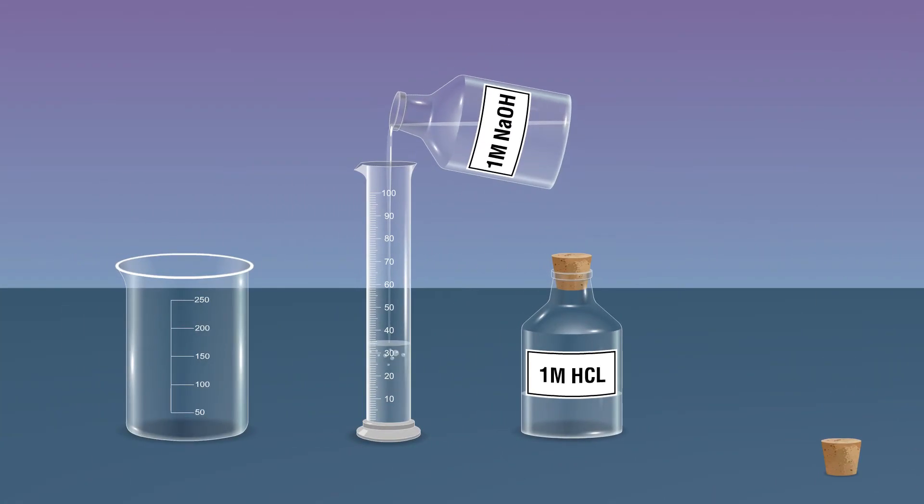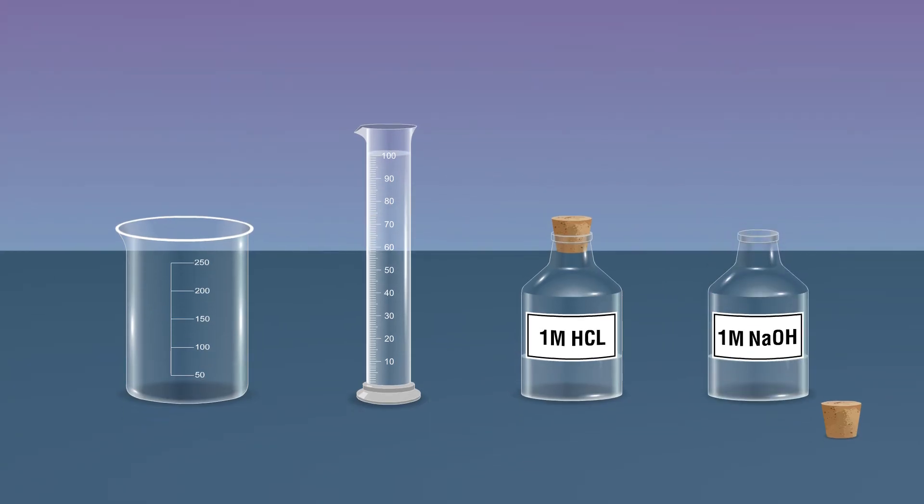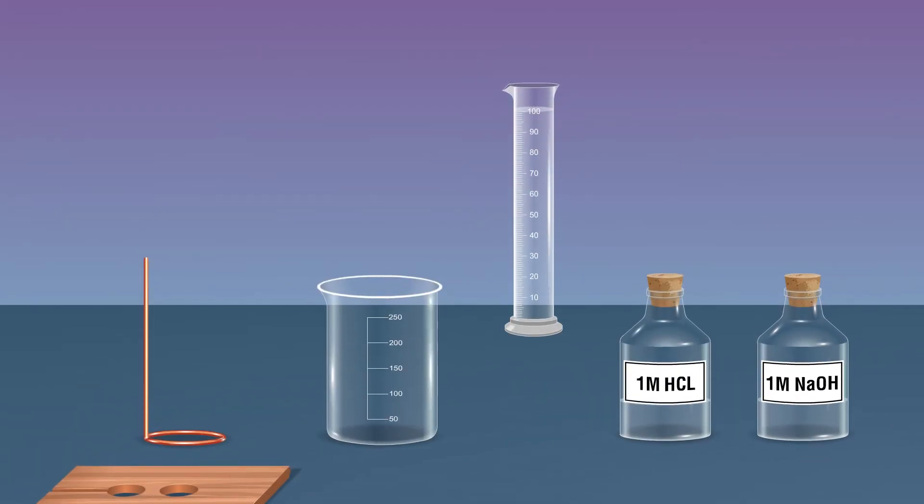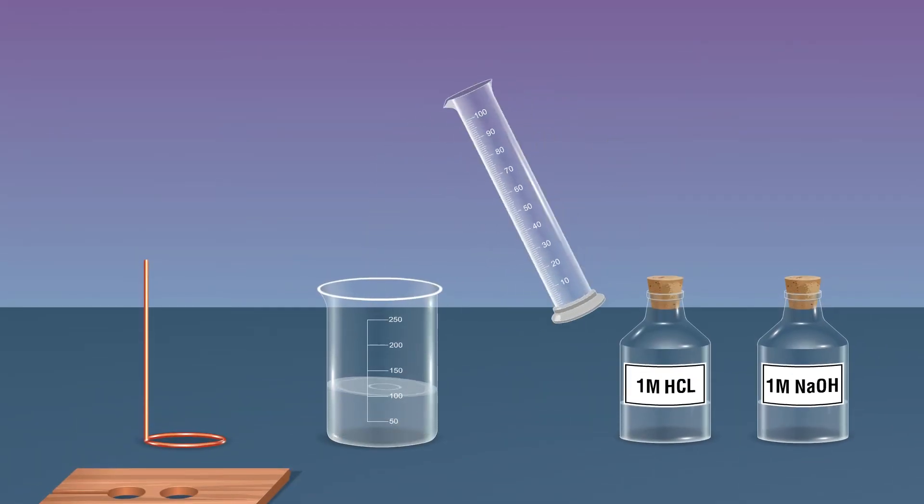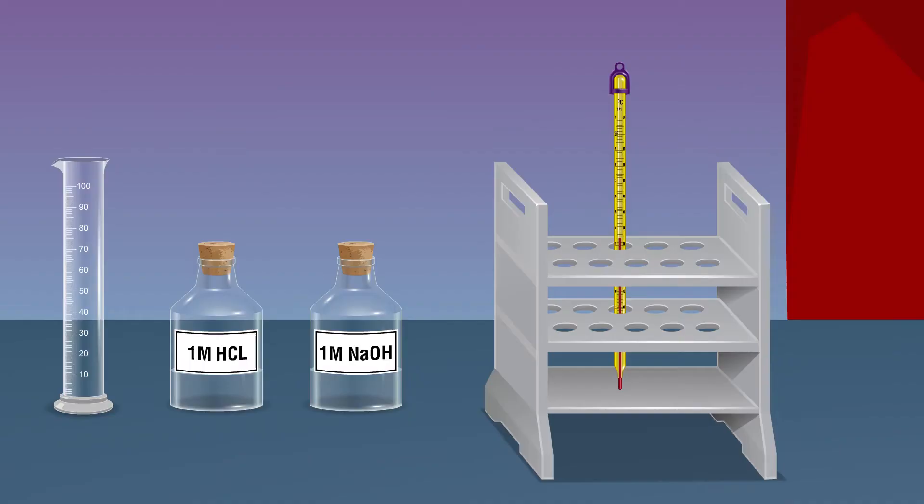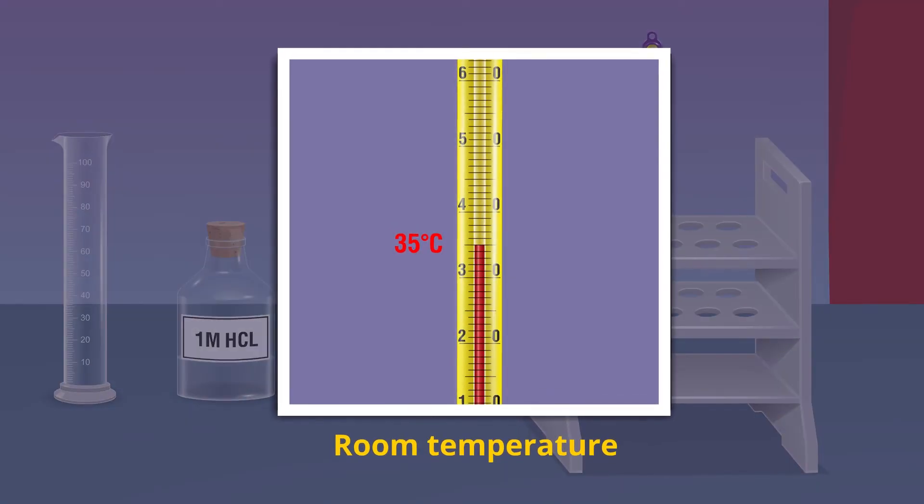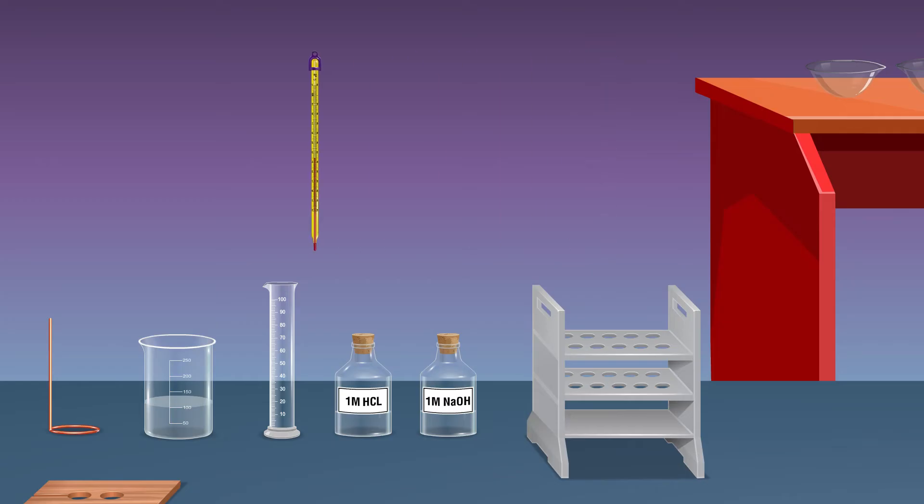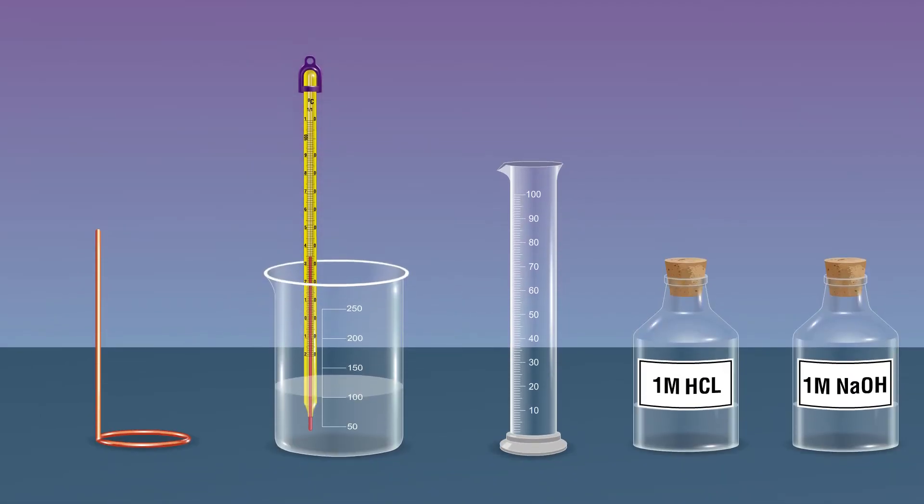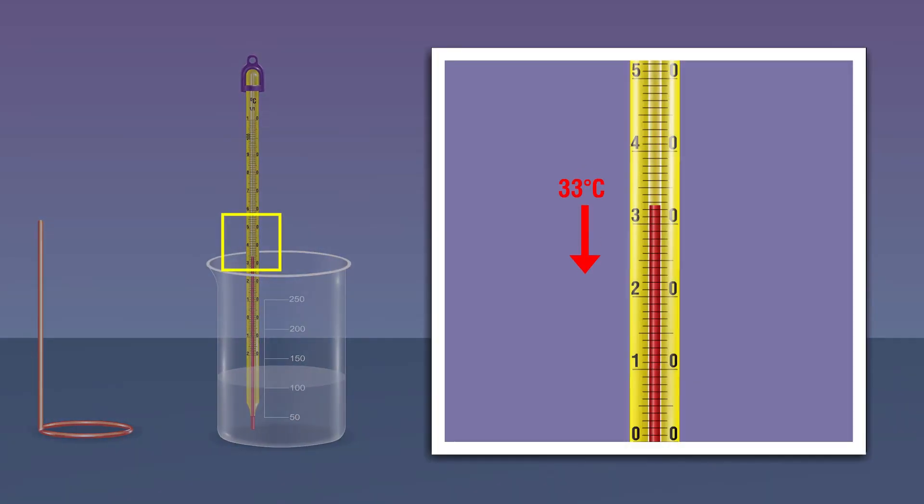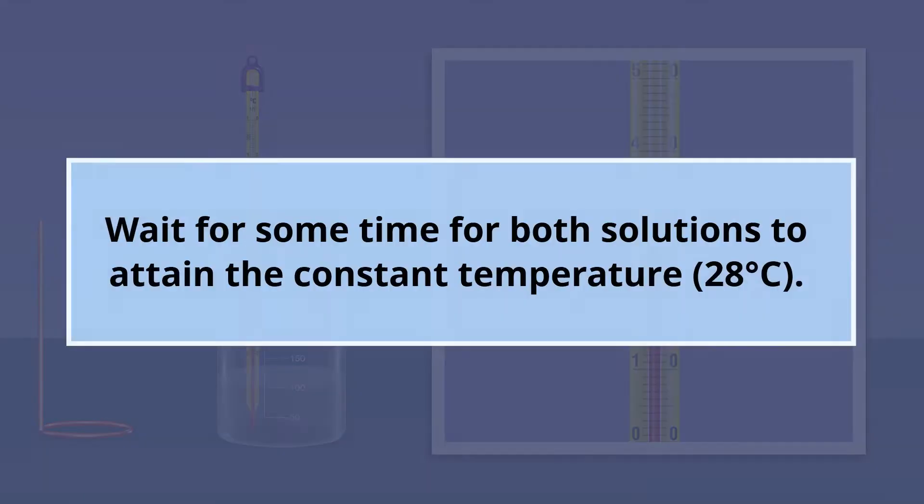Now transfer 100 milliliters of 1 molar sodium hydroxide solution in 250 milliliter beaker using the measuring cylinder. Now measure the initial temperature of the base sodium hydroxide and record the data same as T1 degree Celsius.